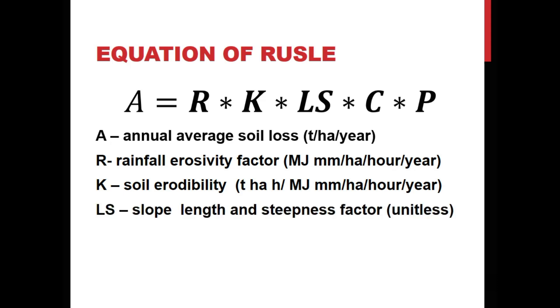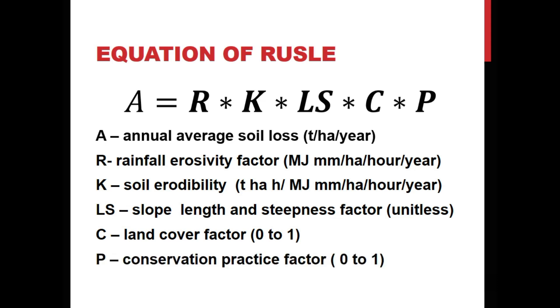LS is a slope length and steepness factor, which is unitless. C is a land cover factor ranging from 0 to 1, and P is a conservation practice factor also ranging from 0 to 1.